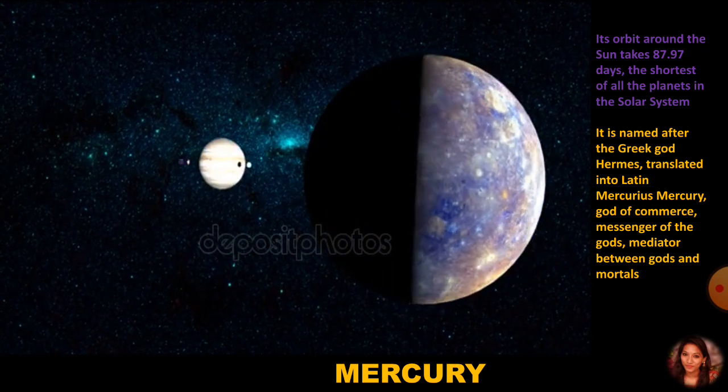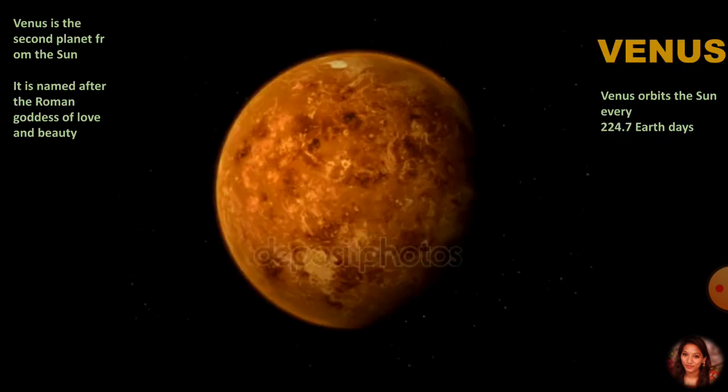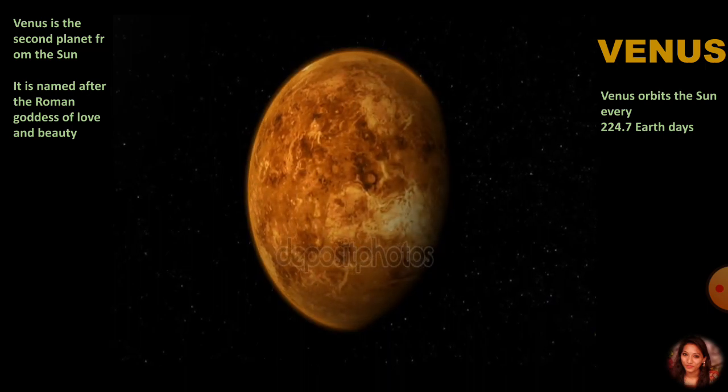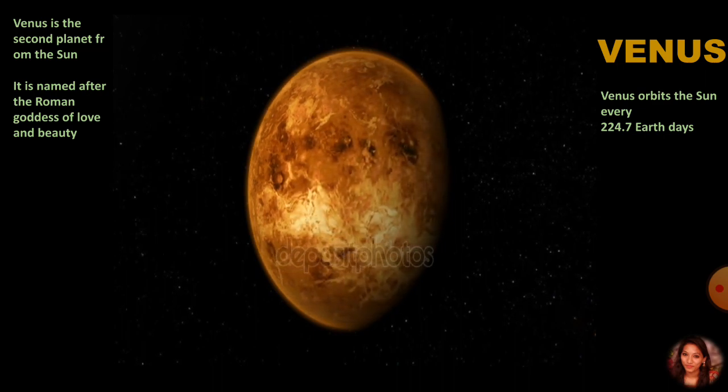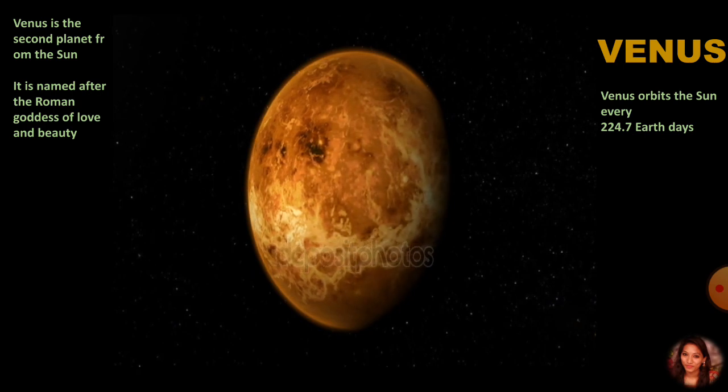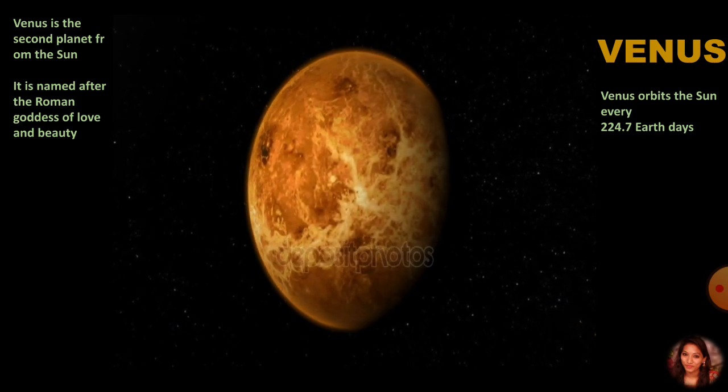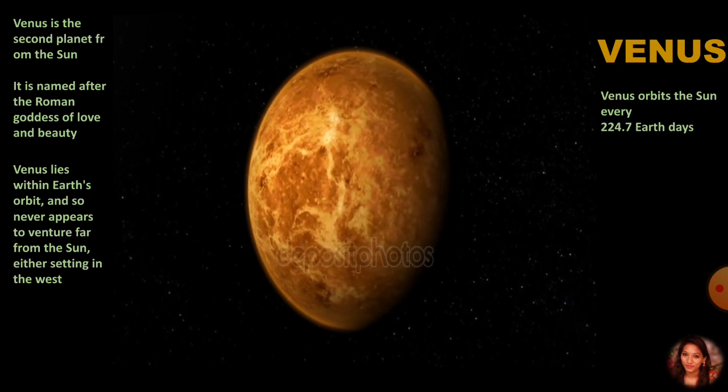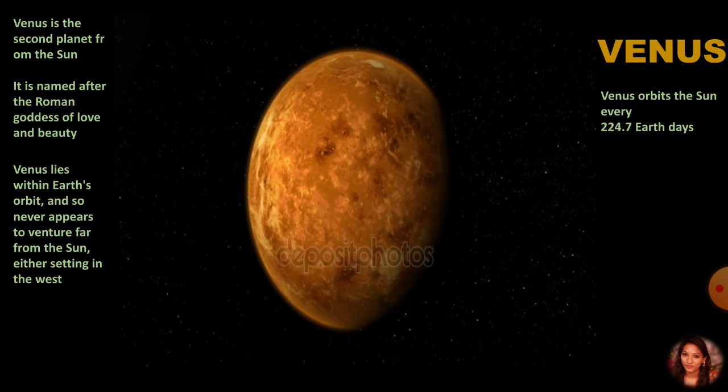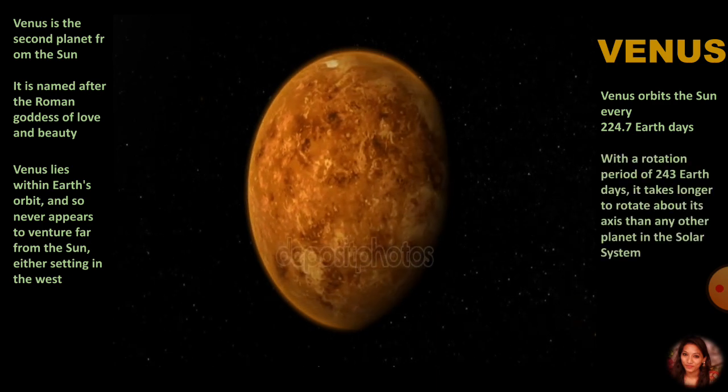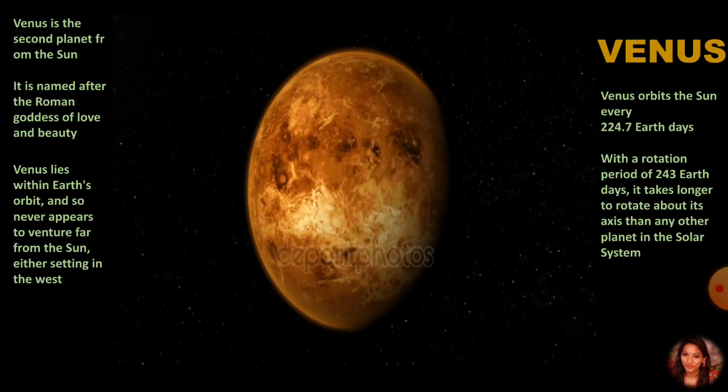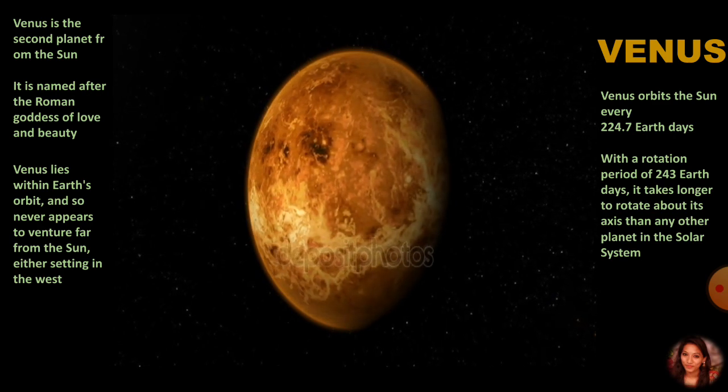Now comes Venus. Venus is the second planet from the Sun. It is named after the Roman goddess of love and beauty. Venus orbits the Sun every 224.7 Earth days. Venus lies within Earth's orbit and so never appears to venture far from the Sun. With a rotation period of 243 Earth days, it takes longer to rotate about its axis than any other planet in the solar system. Venus does not have any moon.